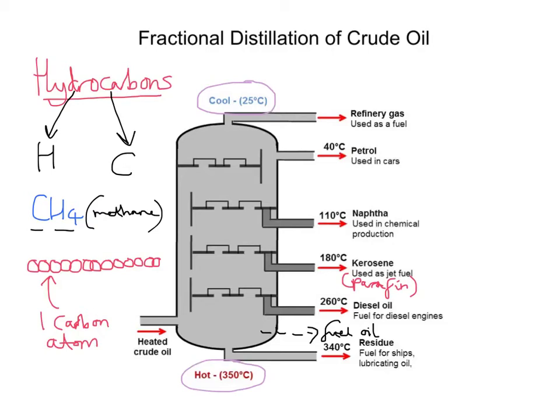Then higher up at 110, we get what's called naphtha. Naphtha is used to make chemicals, used in chemical production. A little higher up, we get gasoline or petrol. That is used as a fuel for cars.